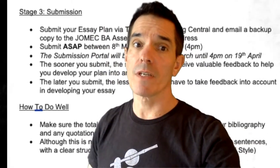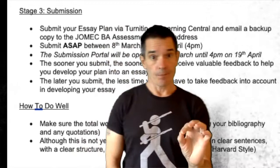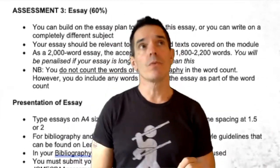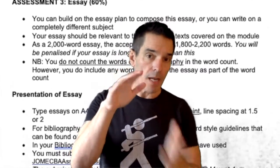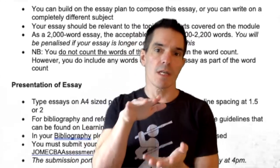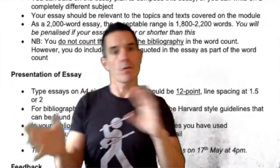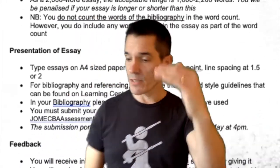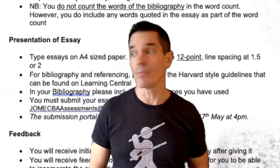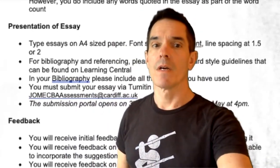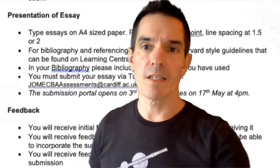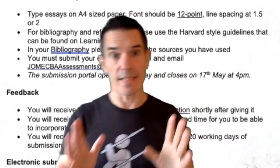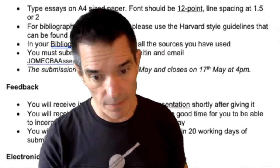The final essay comes at the end and is 60% of your grade. The bibliography can be as long as you like. The main body of the essay should be 2000 words — there is a 10% leeway, so 1800 to 2200. Don't go over or under that. Don't count the words in your bibliography; I'm interested in the essay content. Present it well — 12 point, line spacing at 1.5 or 2, neat and tidy. Use the Harvard referencing system; it's easy, don't be scared of it.